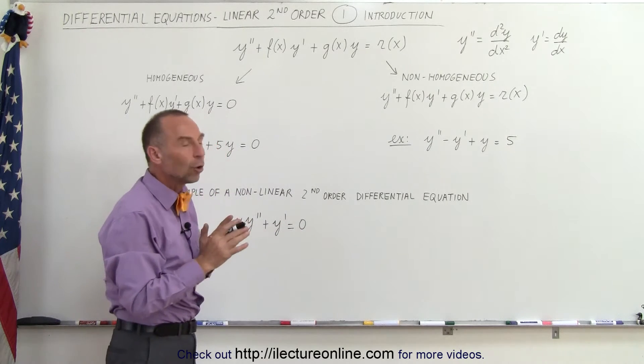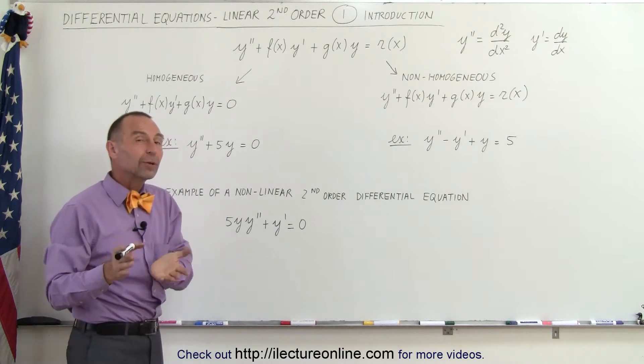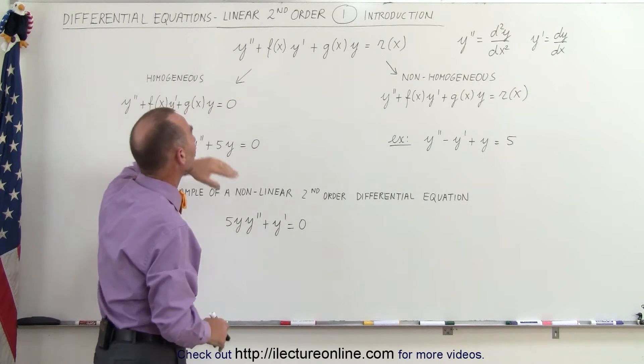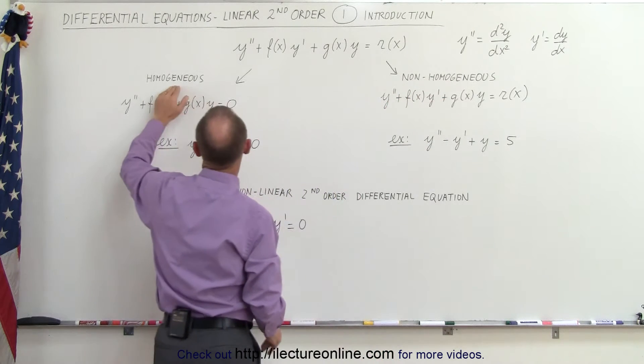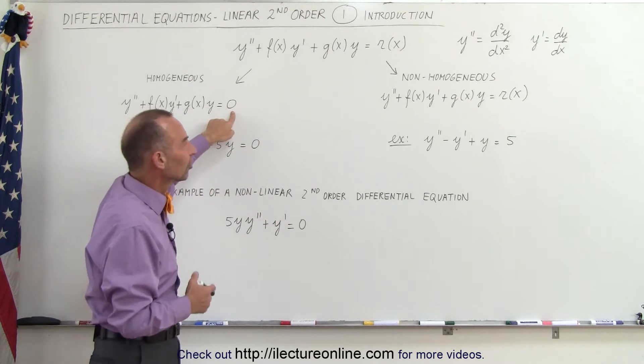Now, notice it doesn't always have to include all of the terms. Just like with the first order differential equations, we can have homogeneous differential equations of the second order and non-homogeneous. Homogeneous simply means that on the right side of the equal sign, we simply have a zero. So r of x is equal to zero.